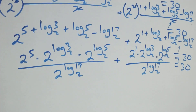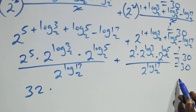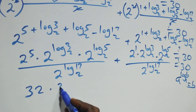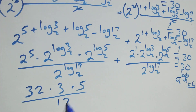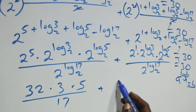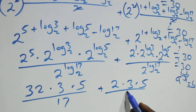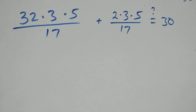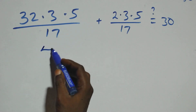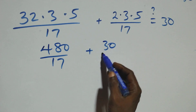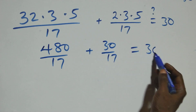Now 2^5 = 32. Using the identity a^(log_a b) = b, we get 2^(log₂3) = 3, 2^(log₂5) = 5, and 2^(log₂17) = 17. So we have 32 × 3 × 5 / 17, plus 2 × 3 × 5 / 17, equals 30.